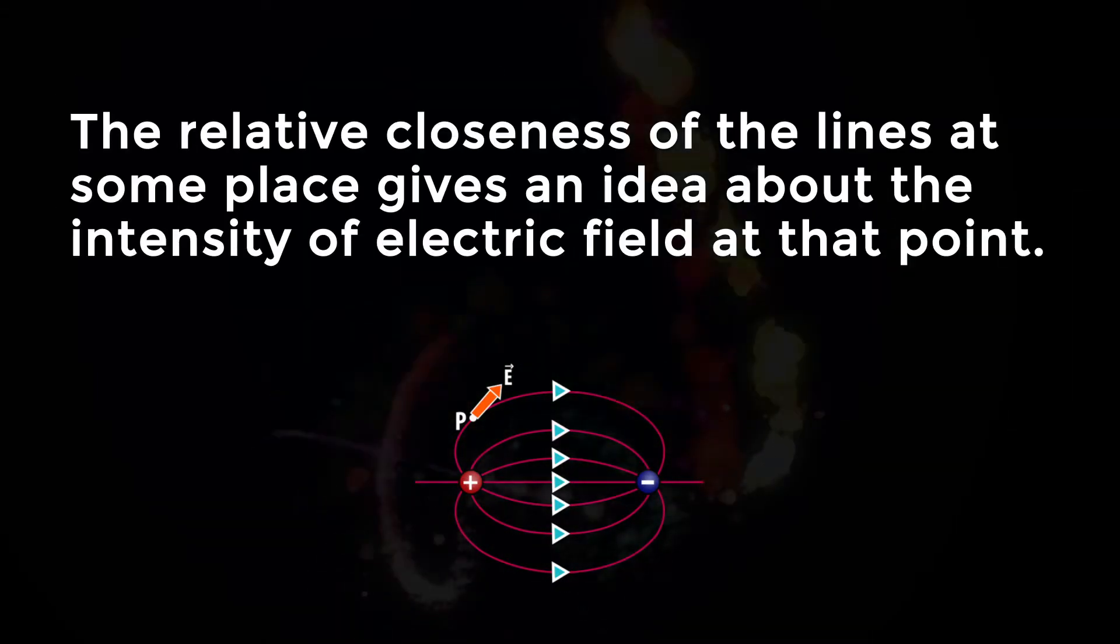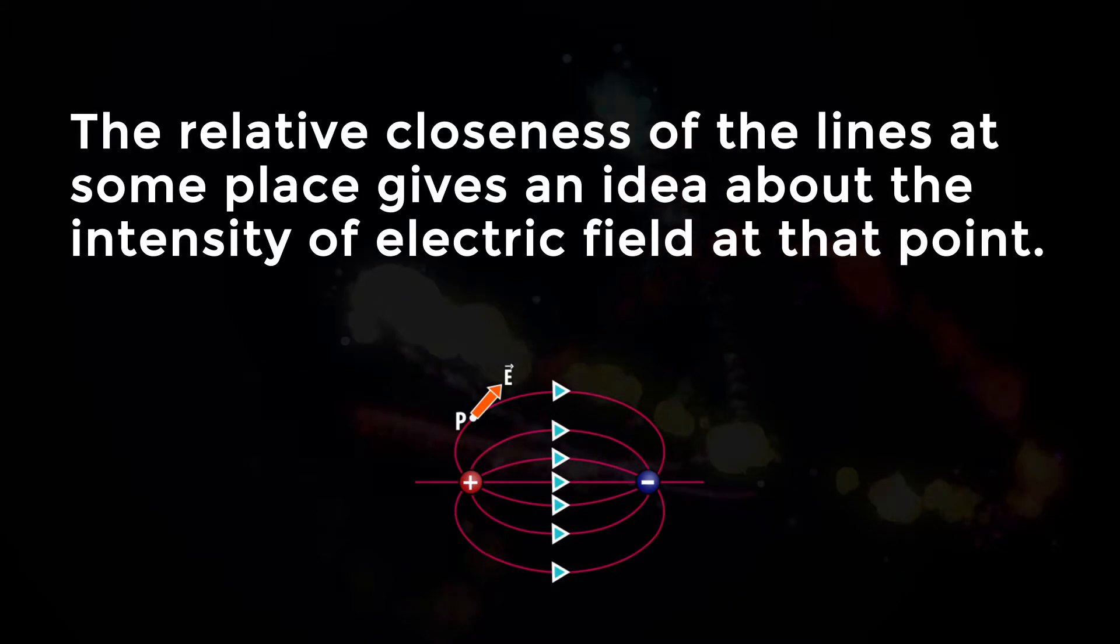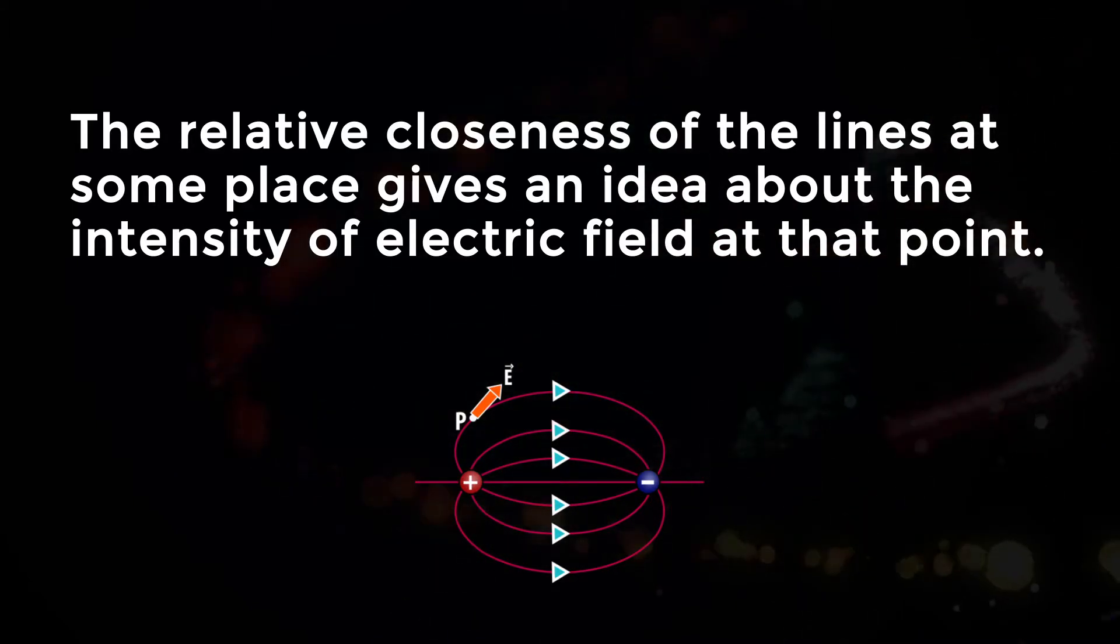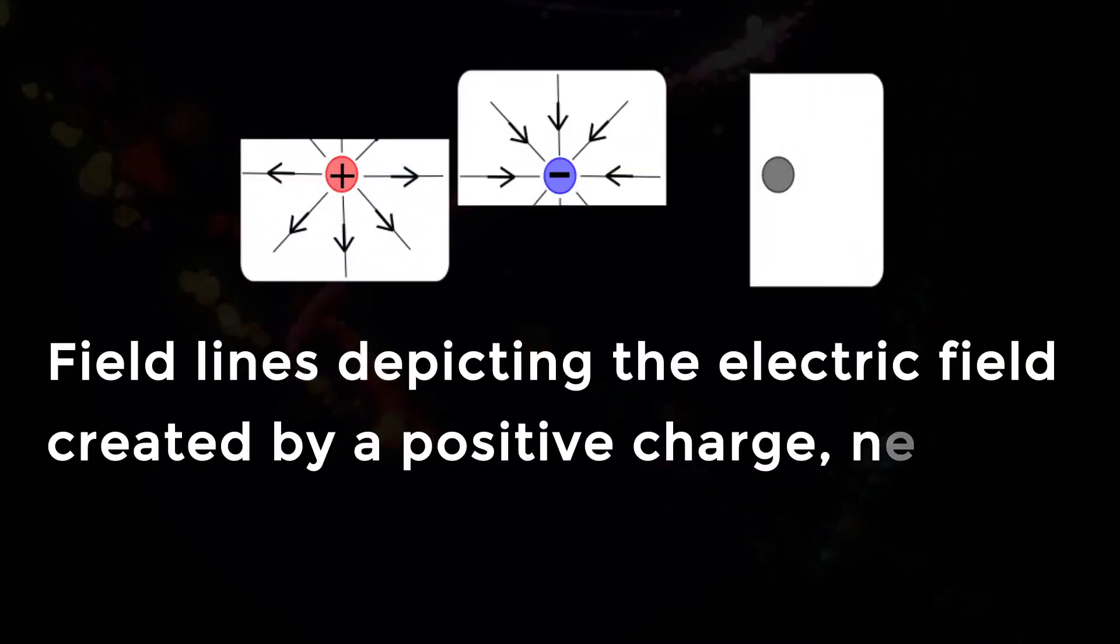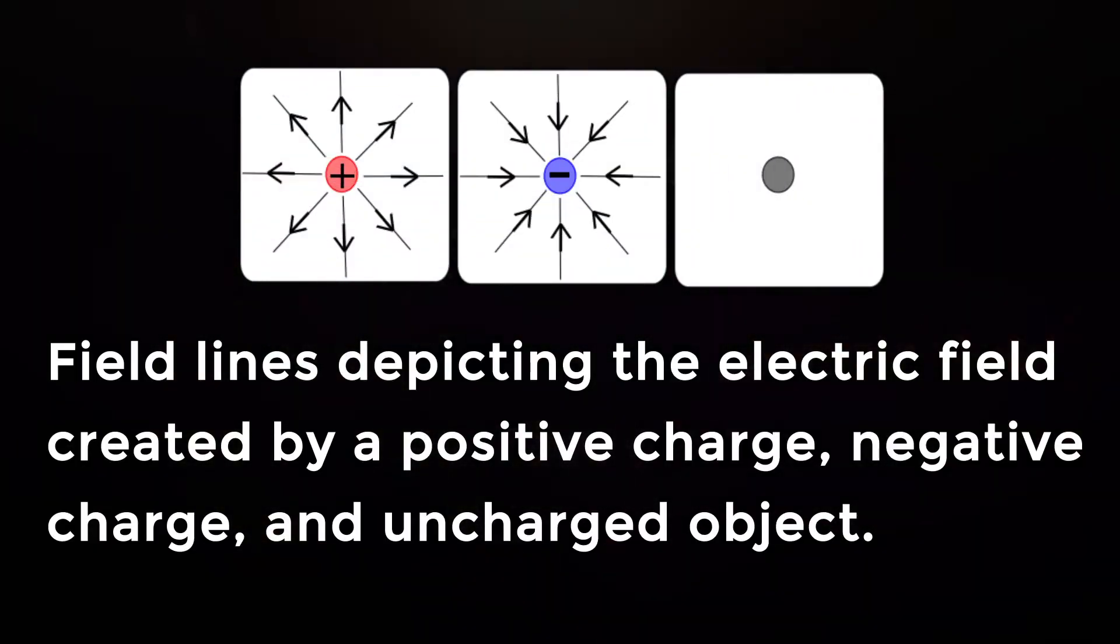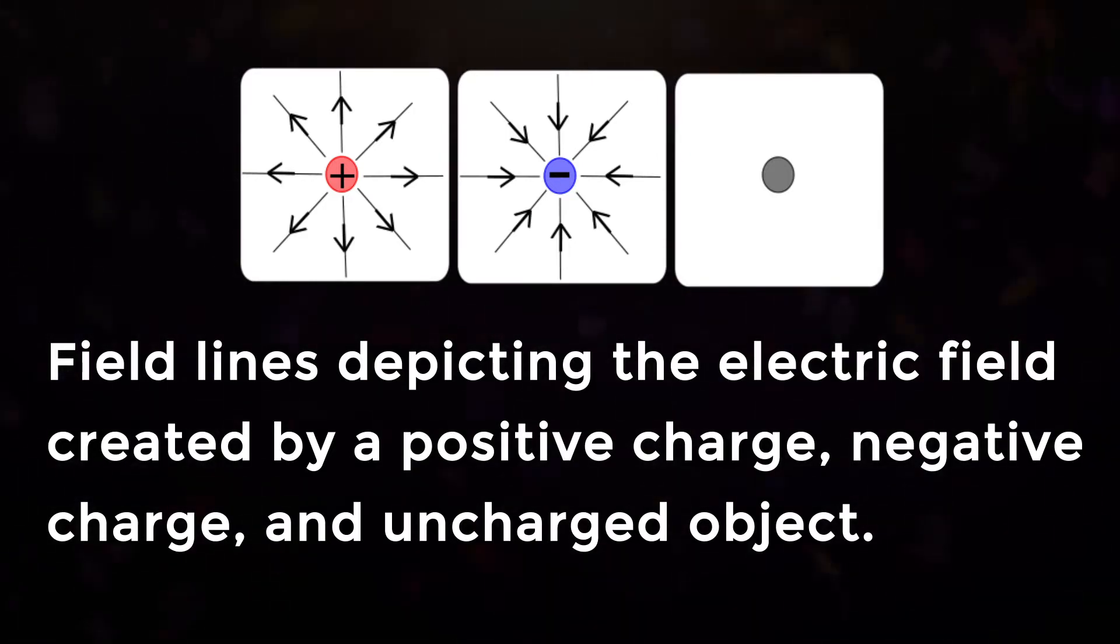The relative closeness of the lines at some place gives an idea about the intensity of electric field at that point. Field lines depicting the electric field created by a positive charge left, negative charge center, and the uncharged object right.